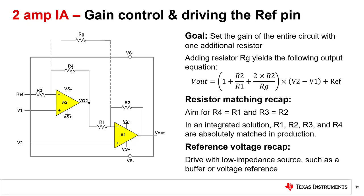These pins should look familiar to the 1-amp and 3-amp IA topologies. As with the other topologies, it's important to drive the reference pin carefully. When the reference pin needs to be lifted above ground, a low impedance source — such as a buffer or voltage reference — is usually needed to drive it. Otherwise, the CMRR of the instrumentation amplifier circuit will degrade.